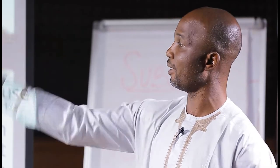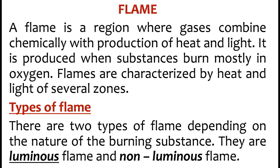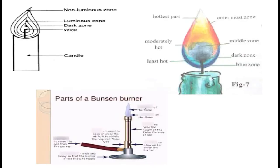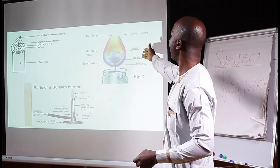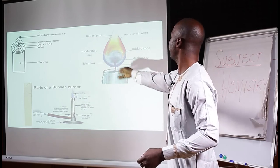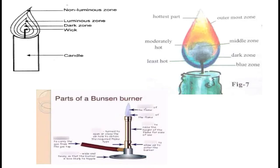Lastly, we will be looking at flame. A flame is a region where gases combine chemically with the production of heat and light. It is produced when a substance is burned, mostly in oxygen. Flames are characterized by heat and light of several zones. The types of flame we have are luminous flame and non-luminous flame. You can see the different zones in the flame: we have the outermost zone, the hottest part which is the pale blue region, a moderately hot region, and another layer at the bottom which is also a hot region. The different temperatures are due to the concentration of oxygen at different layers.